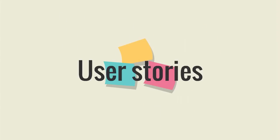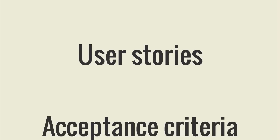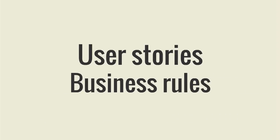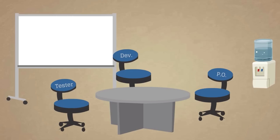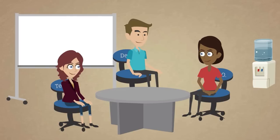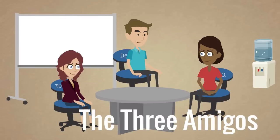So you need to have your work already broken down into user stories. Ideally, you'll have also started to define acceptance criteria, or business rules, for those stories. But they don't need to be exhaustive yet. We'll flesh them out during the BDD process, in a meeting called The Three Amigos.